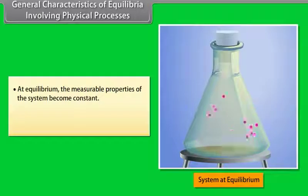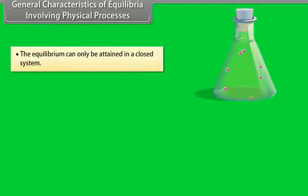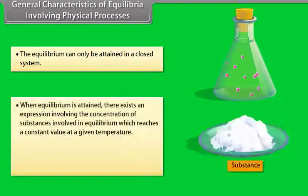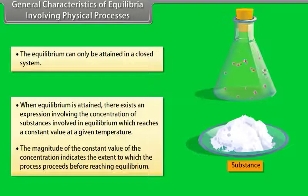General characteristics of equilibria involving physical processes: At equilibrium, the measurable properties of the system become constant. At equilibrium, there is a dynamic balance between two opposite processes. Equilibrium can only be attained in a closed system. When equilibrium is attained, the expression involving the concentrations of substances reaches a constant value at a given temperature, and the magnitude of that constant indicates the extent to which the process proceeds before reaching equilibrium.